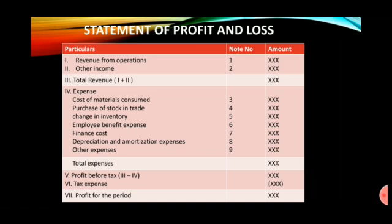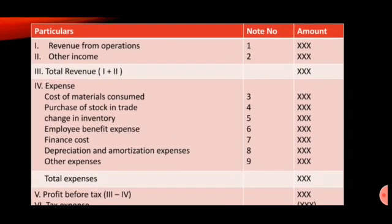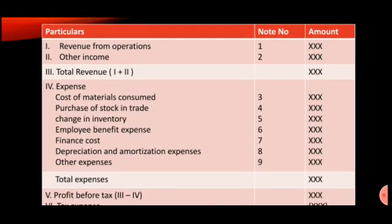The P&L format has: a particulars column, a note number column, and an amount column. Roman numeral I: Revenue from Operations — Note number 1, amount. Roman numeral II: Other Income — Note number 2, amount. Roman numeral III: Total Revenue — the sum of I and II.